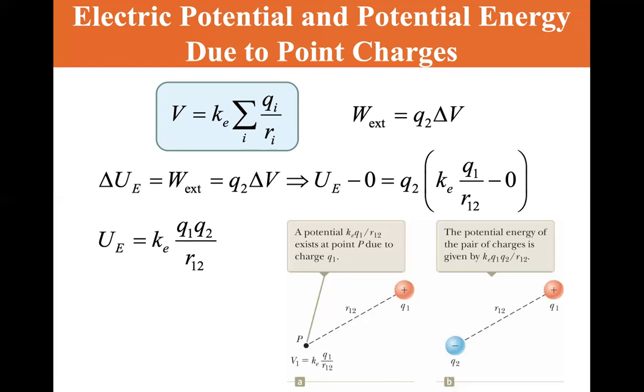It's q₂ times kₑ q₁ over r₁₂ minus zero. So the electric potential energy is equal to kₑ q₁ q₂ over r₁₂.